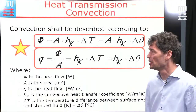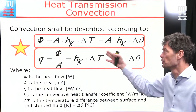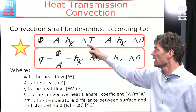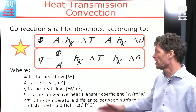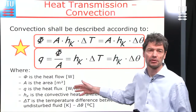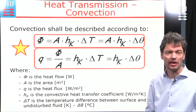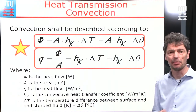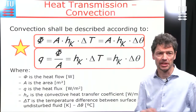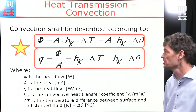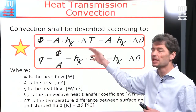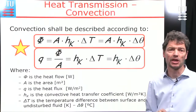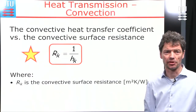For heat transmission by convection, we can find the heat flow or the heat flux, whether it's per area or not. For that, we need to find the convective heat transfer coefficient. With the heat transmission coefficient together with the temperature difference, we can calculate the heat flow or the heat fluxes — that's what we are really up to after completing this lecture.